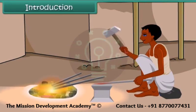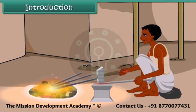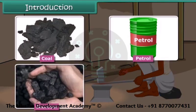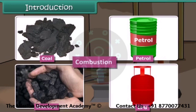The blacksmith burns coal to get hot iron which can be beaten to desired shape. A variety of fuels is used in daily life such as coal, petrol, charcoal, LPG, etc. Do you know which chemical process is taking place during the burning of these fuels? It is combustion. In this lesson you will learn about combustion of fuels.